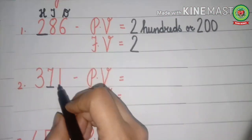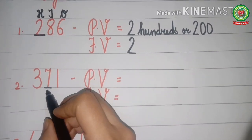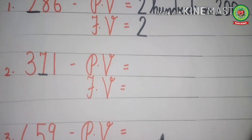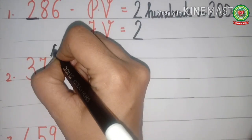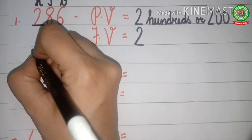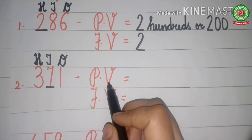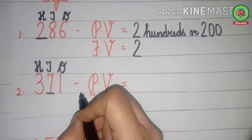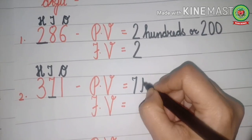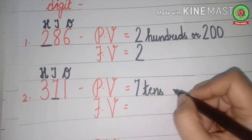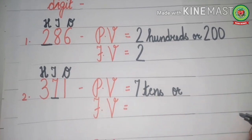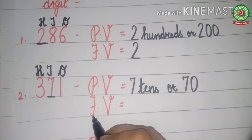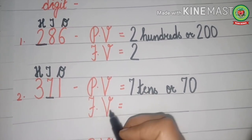Let's move to another example: 371. We will write the place value and face value of 7. First, write down the place value chart: ones, tens, and hundreds. The place value of 7 — tens is written above 7 — so the place value of 7 is seven tens. Spell 'tens' — T-E-N-S, tens. Tens has one zero, so we write 70.